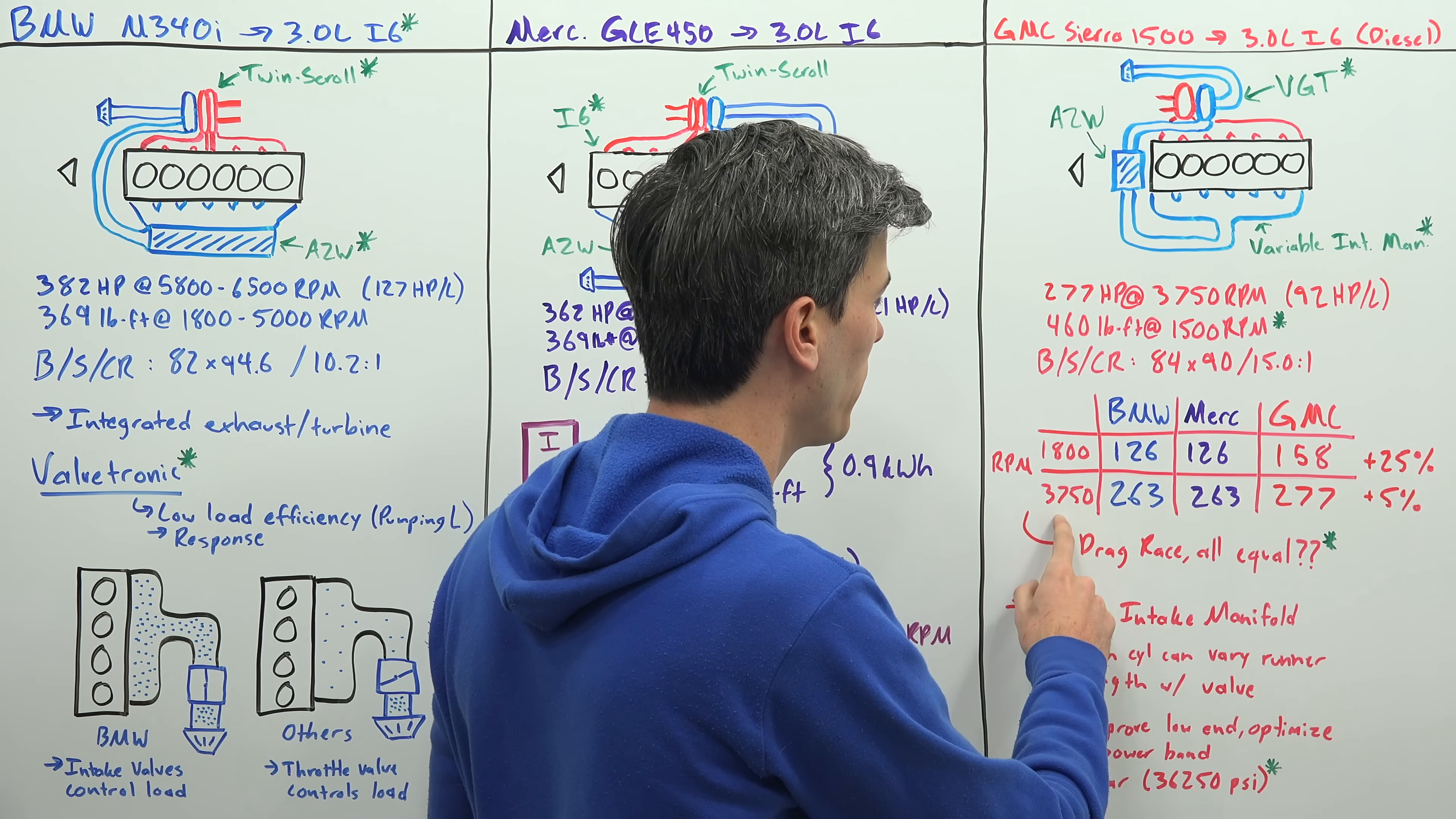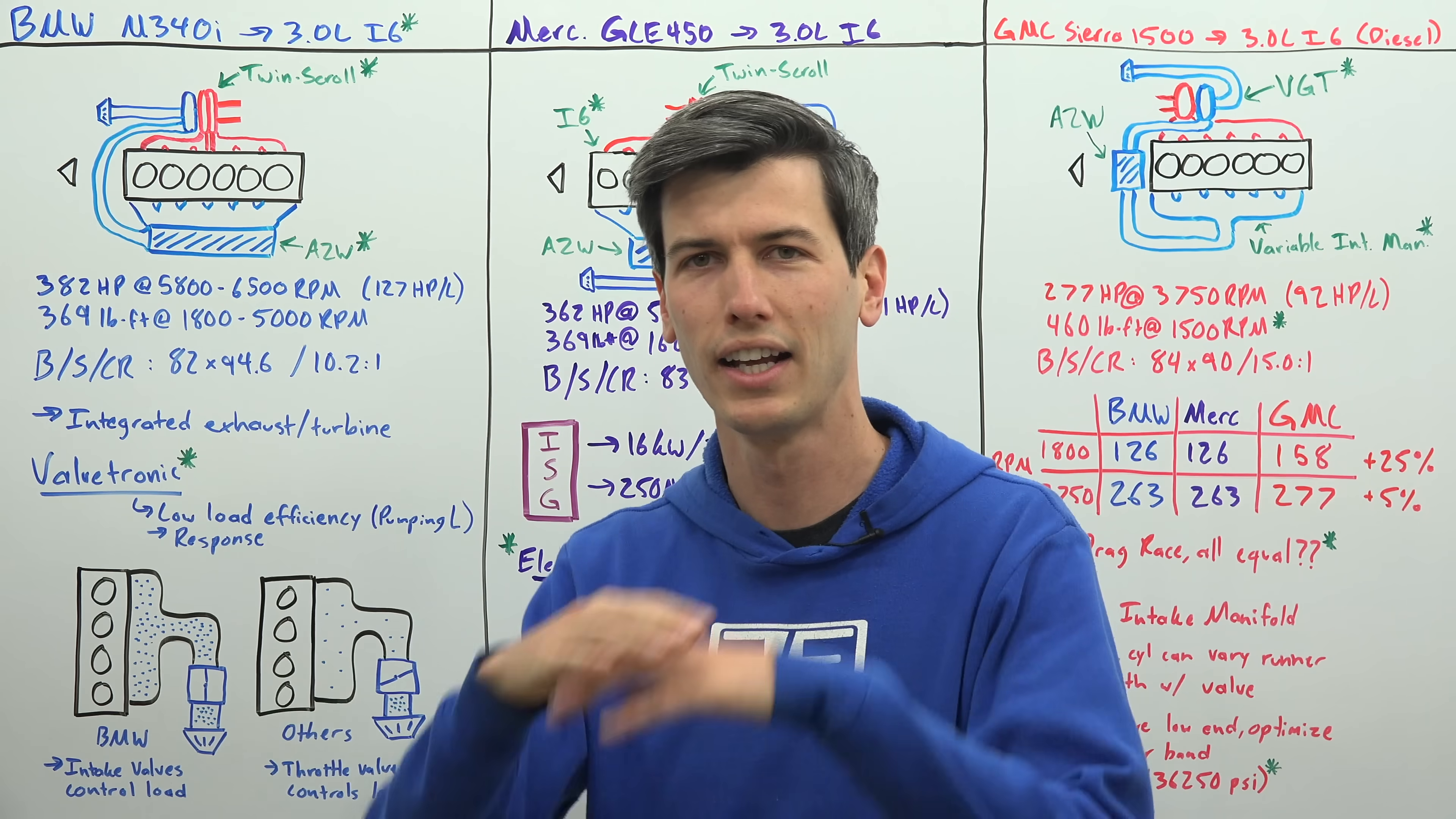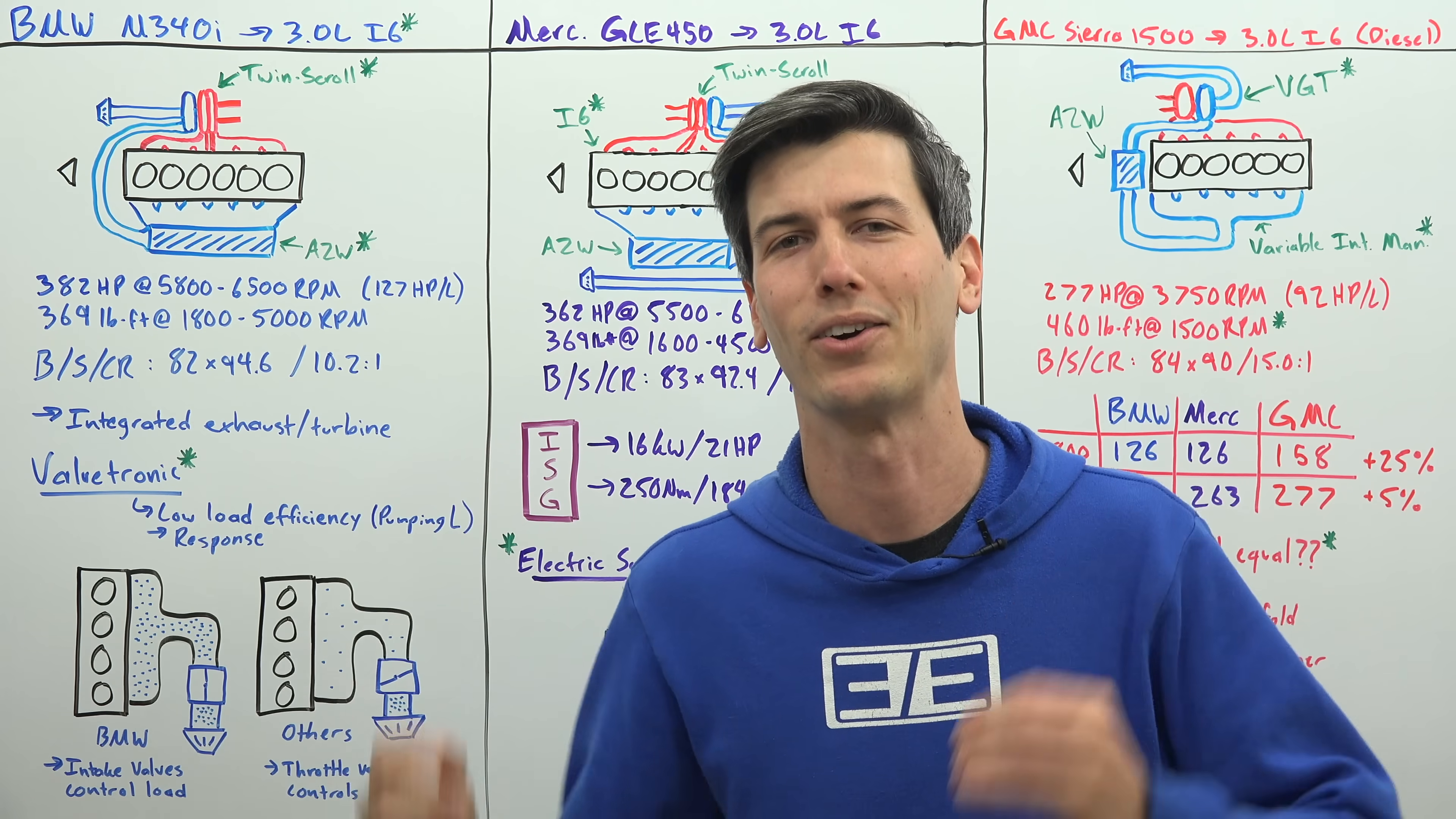Then as we keep climbing, the BMW takes the lead and once we get this into its higher RPM region, it's done. It's going to stay ahead for the rest of the race forever because it has more power, and power again is what matters.